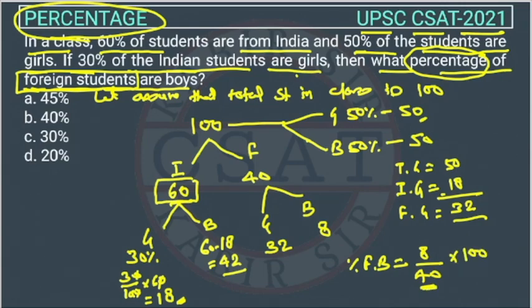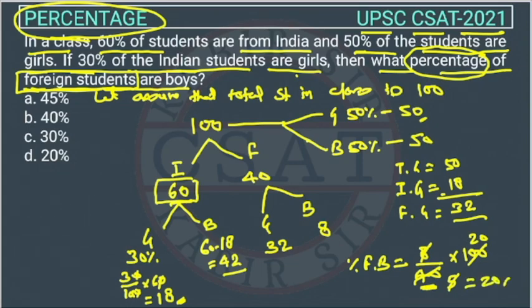So this will be 8 upon 40 into 100. We can simplify: 8 divided by 40 gives 1/5, and 1/5 into 100 equals 20. So the answer is 20%, which is option D.